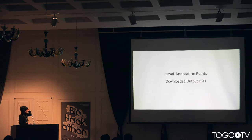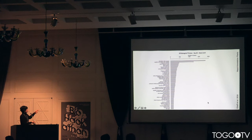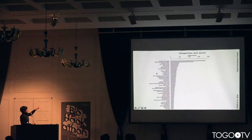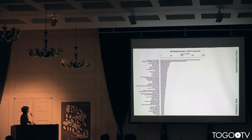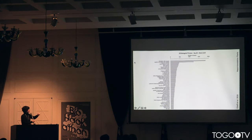When you download the data, here are just a few examples. This is biological process — the table contains all data but the graphics show only the top 50. The next one is molecular function.